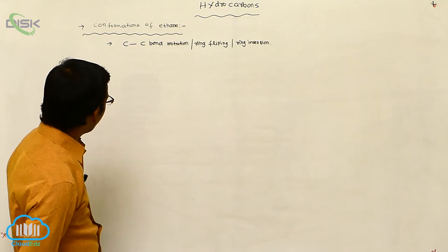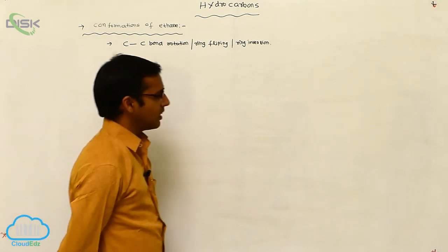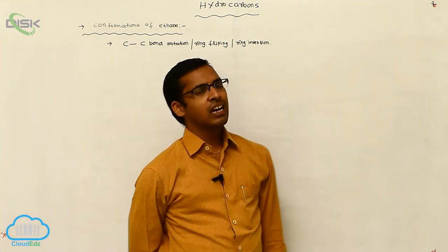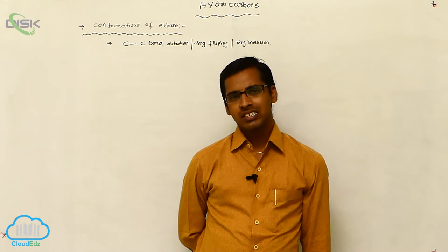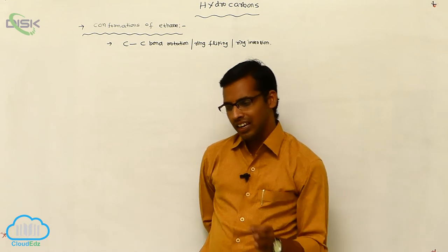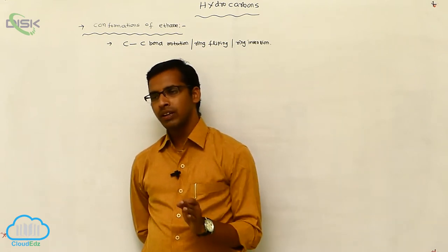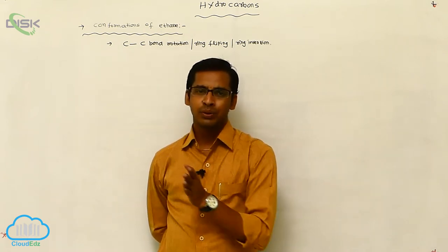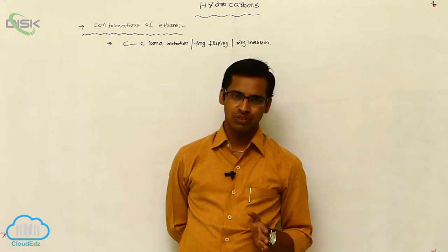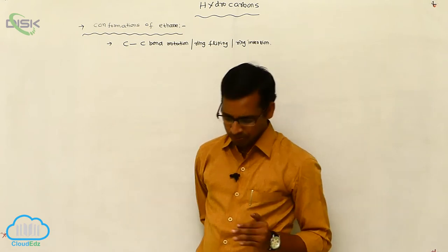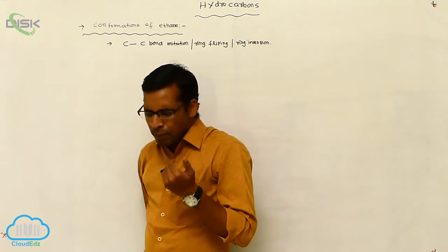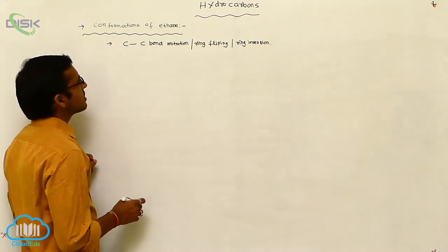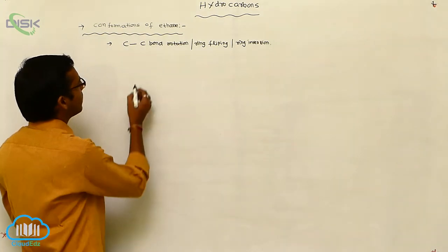Now for conformations of ethane — each form should be written first in Fischer projection formula, then converted to Newman projection formula.